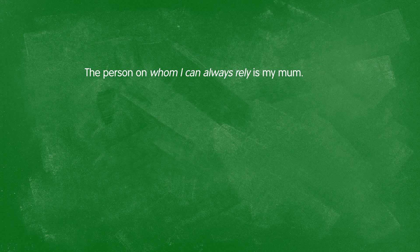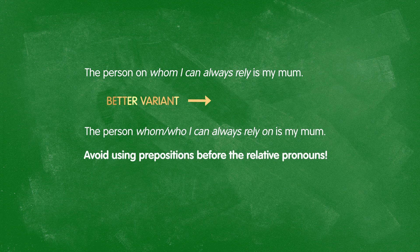The final point for today is the use of prepositions with the relative clause. The person on whom I can always rely is my mom — this is grammatically correct but sounds very formal. Much more casual and common would be: the person whom I can always rely on is my mom. As a general rule, it's better to put prepositions at the end of your relative clause rather than the beginning, because it sounds much more relaxed and friendlier.